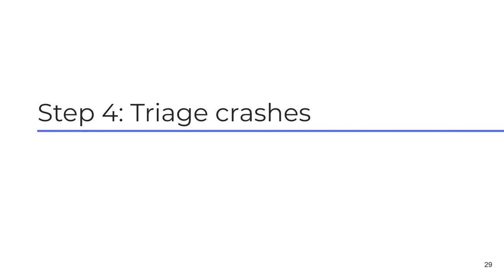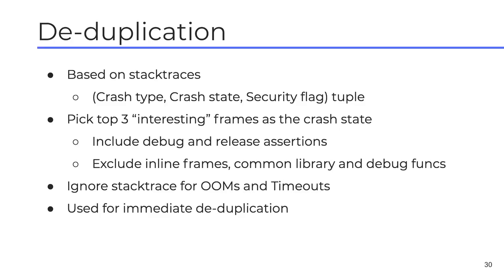Now that we have a scalable fuzzing pipeline, we face another important problem: how do we triage thousands of crashes? The first part of triage is deduplication. For each crash, we generate a tuple consisting of a crash type (like use-after-free or null dereference), a crash state derived from the stack trace, and whether the crash is a security bug. The crash state — taken as the top three interesting frames from the stack — is the most important part. We filter out uninteresting frames such as libc functions or general logging functions. For out-of-memory conditions or timeouts, where reliable consistent stack traces are hard to get, we only file one of those at a time.